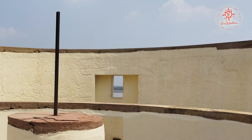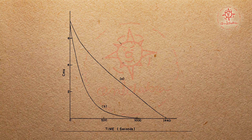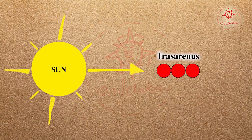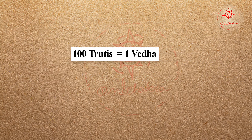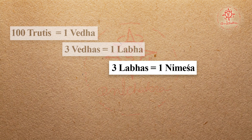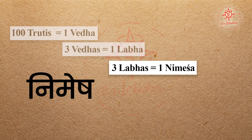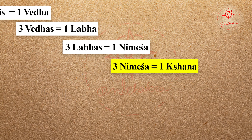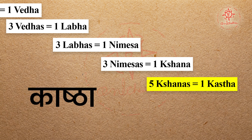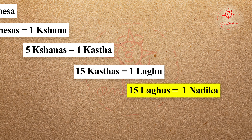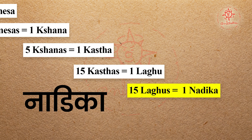Now let's see how they calculated time using these units. The measure of time taken by sunlight to cross a composite of three Trasarenus is known as a Truti. A hundred Trutis make a Veda, while three Vedas constitute a Lava. A composite of three Lavas is known as a Nimesh, or the twinkling of an eye. Three Nimeshas make one Shana or moment. A composite of five Shanas is known as a Kashtha, while fifteen Kashthas go to make a Laghu.